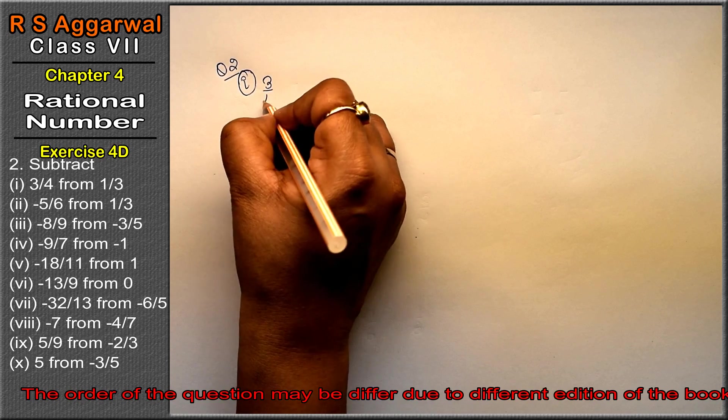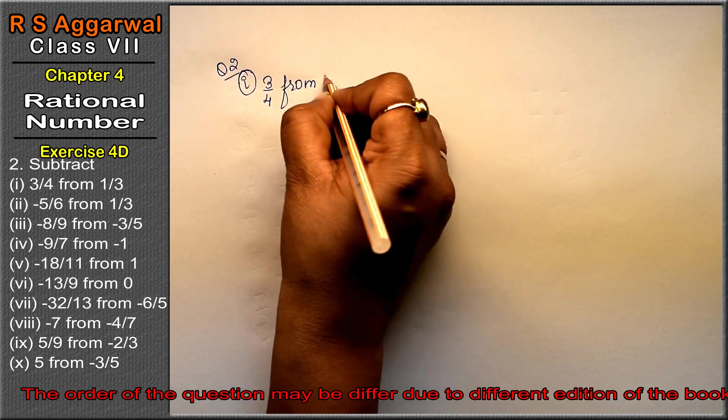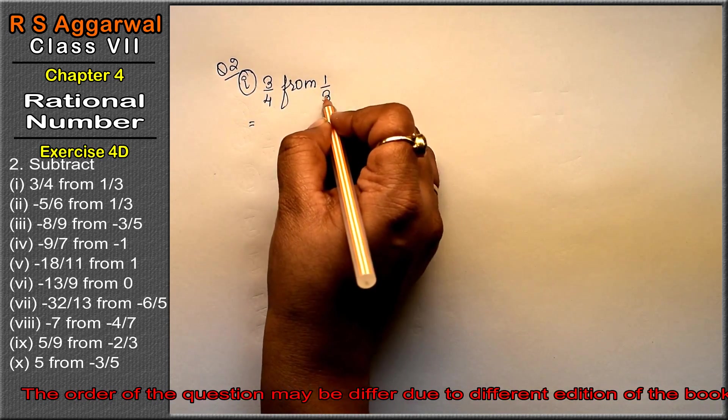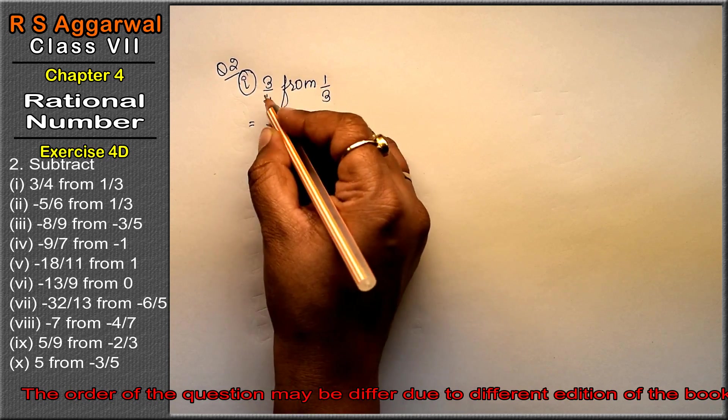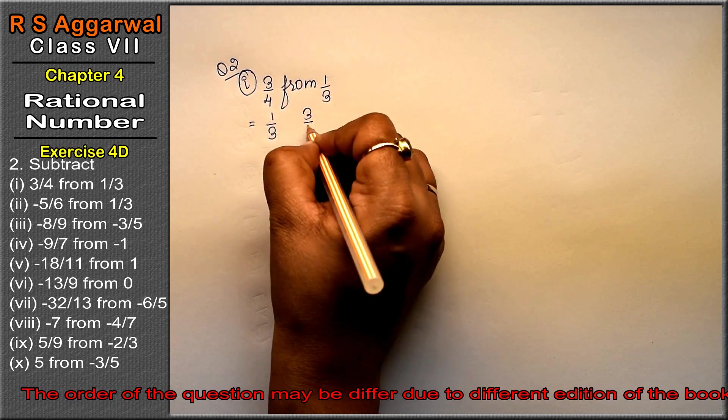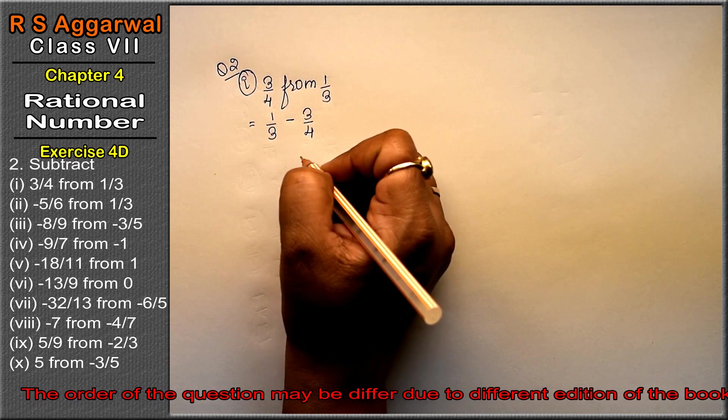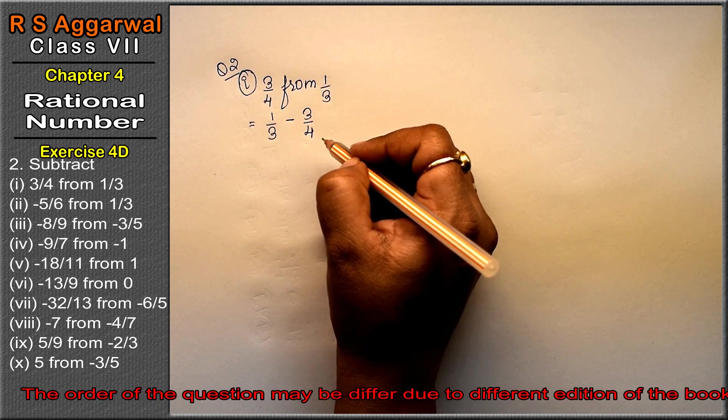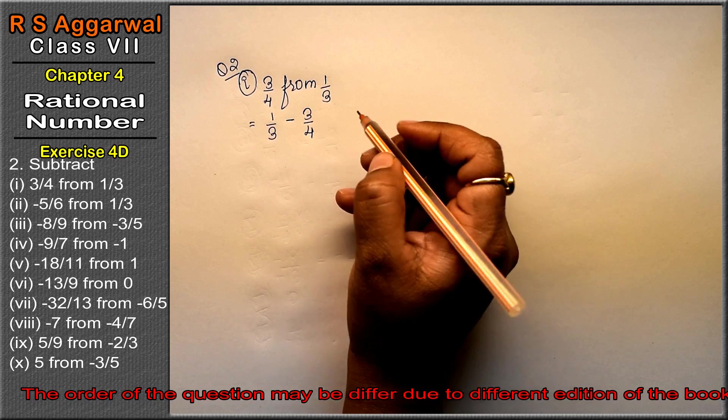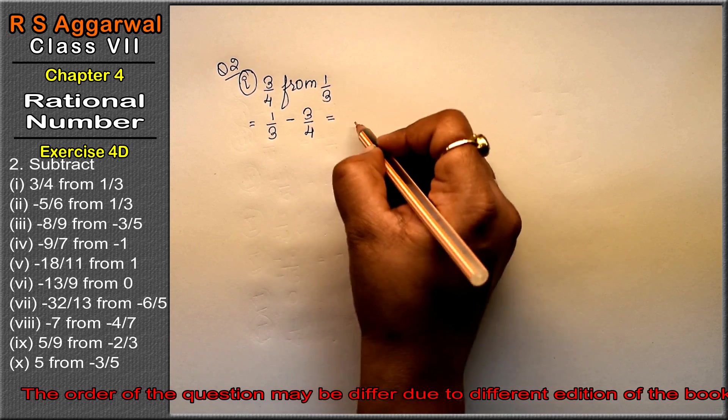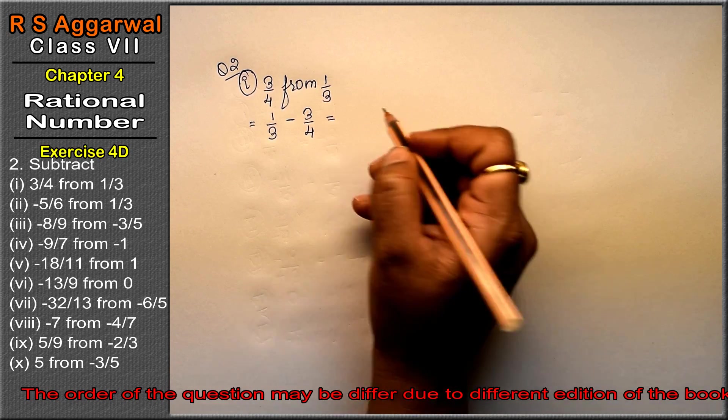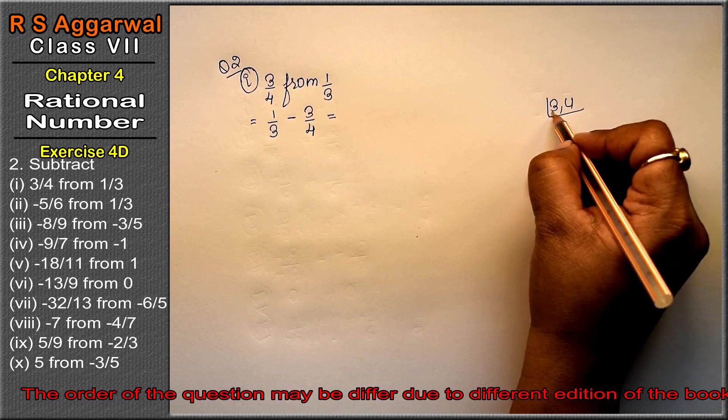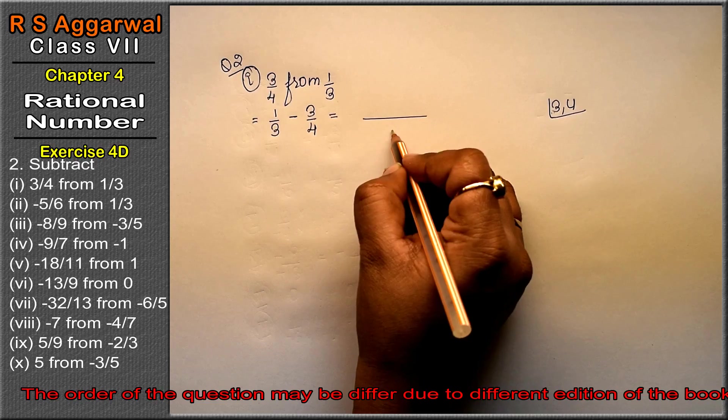First part is 3 upon 4 from 1 upon 3. Friends, subtract from 1 upon 3. We always remember that whatever comes after 'from' goes first, then the subtraction sign. 1 upon 3 minus 3 upon 4. So, 3 and 4 LCM - both are unique numbers, so direct 3 times 4 is 12.